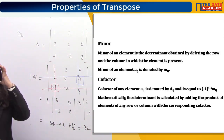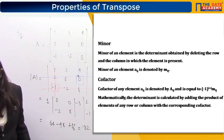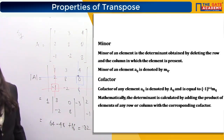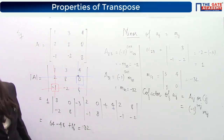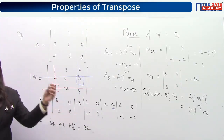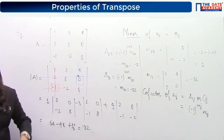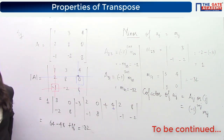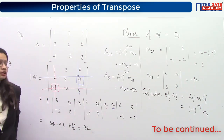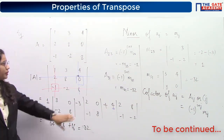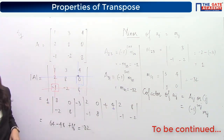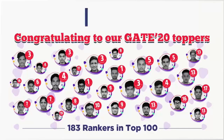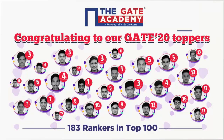These are the two important terms: minor and cofactor. Copy the definitions and examples from the slide.